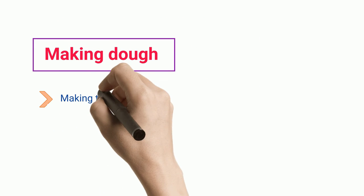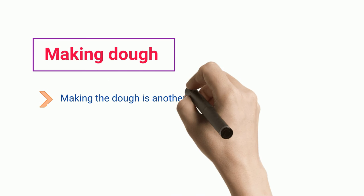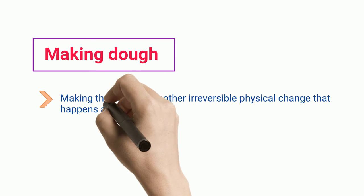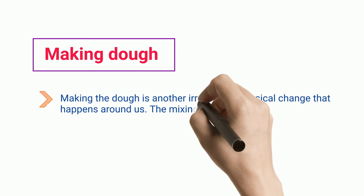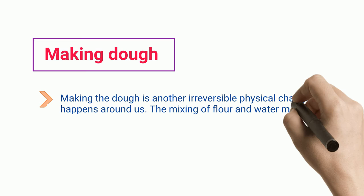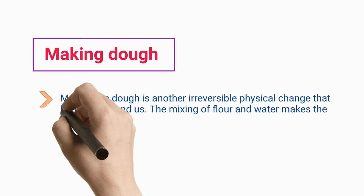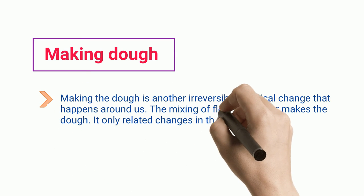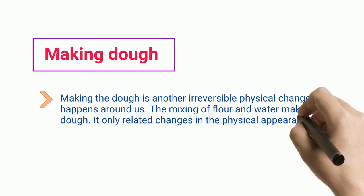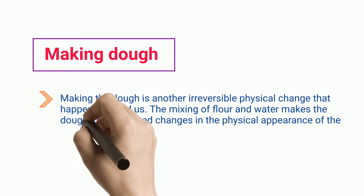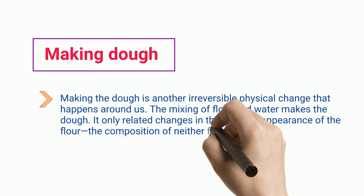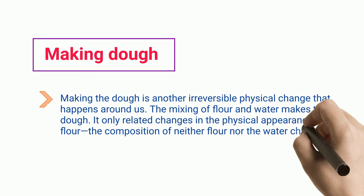Making dough: making dough is an irreversible physical change. The mixing of flour and water makes the dough — it only involves changes in the physical appearance of the flour. The composition of neither the flour nor the water changes.